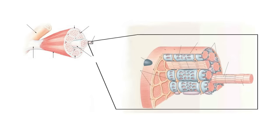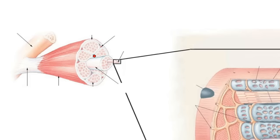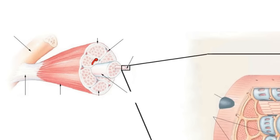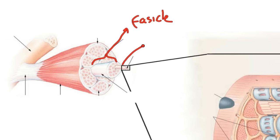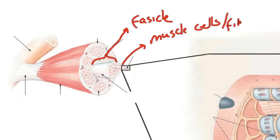Here we're looking at a muscle and there are a few terms that I want you to know. This is called the fascicle — this section right here, that's the fascicle. That is basically a bundle of muscle cells. And this of course would be individual muscle cells, or as I said in the last episode, you can also call them muscle fibers.